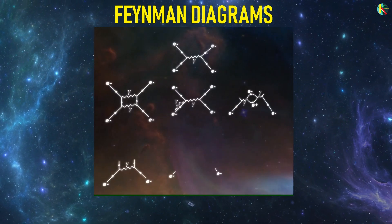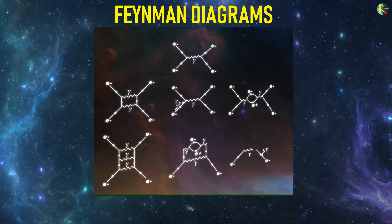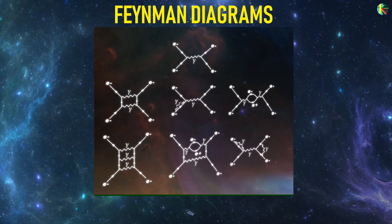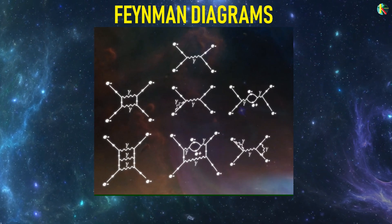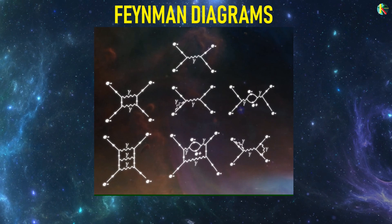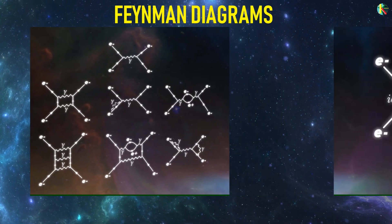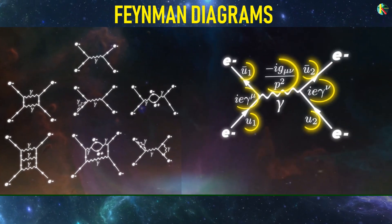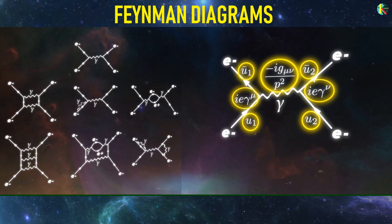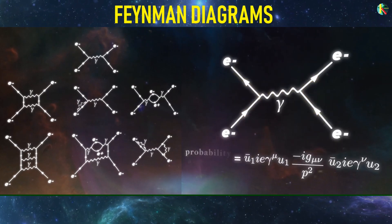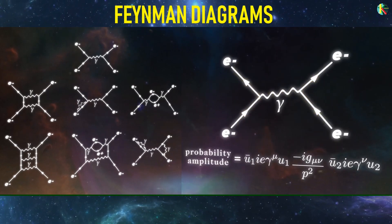This is where the Feynman diagrams come into play. They allow physicists to quickly figure out which of the infinite possibilities need to be considered to get an answer that's good enough. Each diagram represents a family of interactions and tells us the equation needed to calculate the contribution of that family to the total probability. These absurdly simple set of rules allow us to easily find out the important interactions.